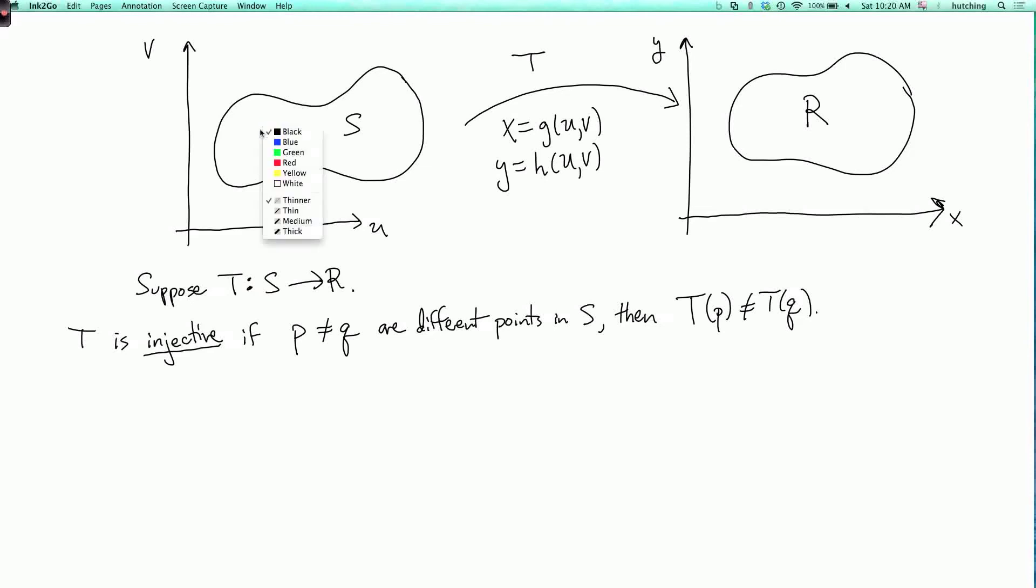So if I start with two different points here, so here's P and here's Q, then I'm going to end up at two different points T of P, maybe T of Q is over here somewhere. So you can't have both of these going to the same place.